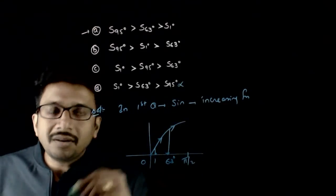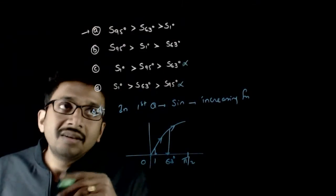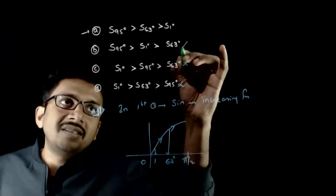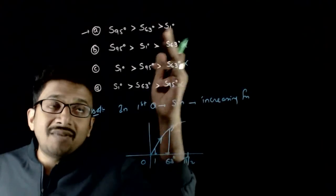So this option is obviously wrong. But here also, sin 1 is greater than sin 63, this is wrong. Sin 1 is greater than sin 63, this is also wrong. So this has to be right, sin 1 less than sin 63.